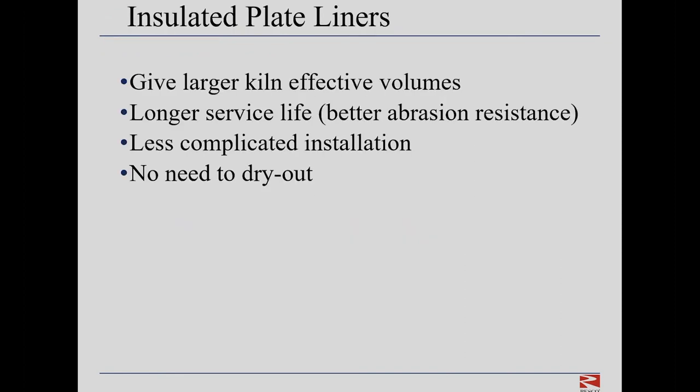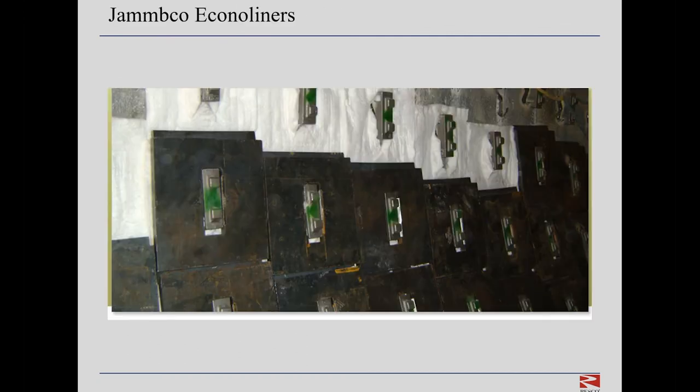Some kiln operators have recently moved to metallic insulated plate liners in the chain system, replacing the castable or gunning mix refractory. Reported advantages of insulated plate liners include larger kiln effective volumes — as the insulation is thinner than castable — longer service life of the plates, a less complicated installation, and no need to dry out the castable after initial installation or repair. This is a photo of the Jamco Econiliners, which have replaced the refractory castable prior to the attachment of the chains. Note the ceramic fiber between the liner plates and the kiln shell.